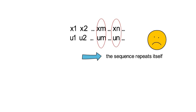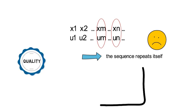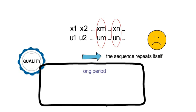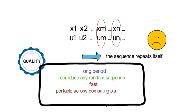Therefore, a good random number generator needs the following properties. First, it needs a long period — it has to produce many distinct values before repeating itself. Second, it has to allow us to reproduce any random sequence. Third, the generation algorithm needs to be fast. Fourth, it needs to be portable across different computing platforms. And fifth, it needs to produce output that statistically appears random. So let's look into one specific random number generator: namely, the linear congruential generator.